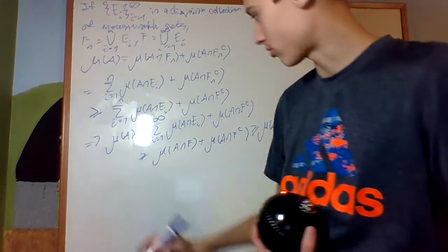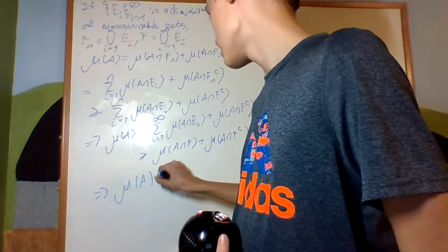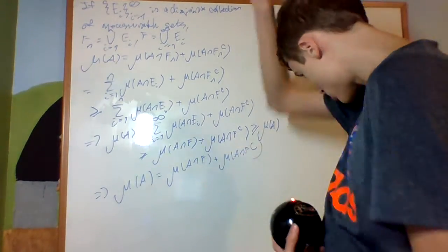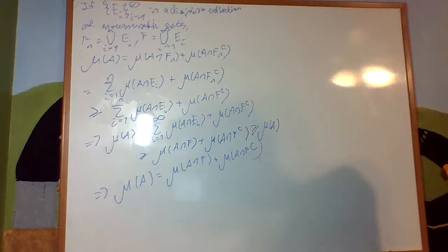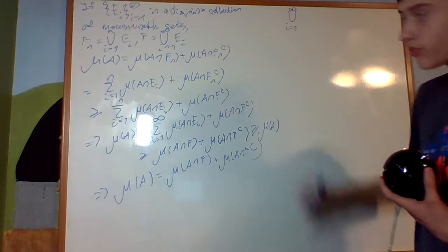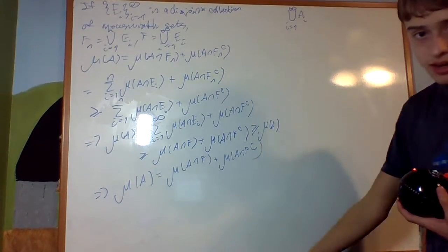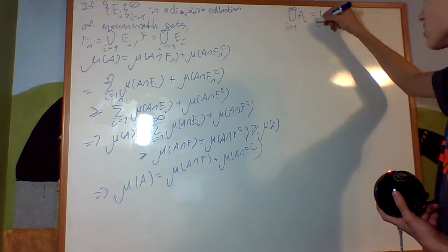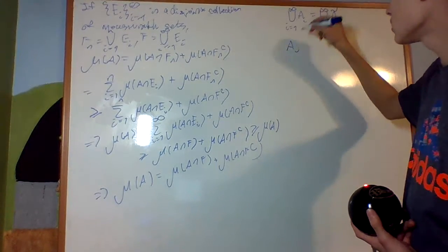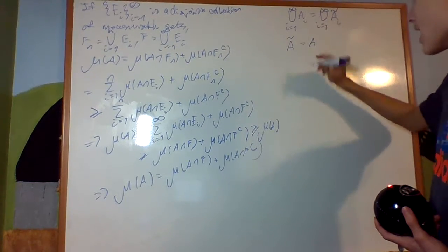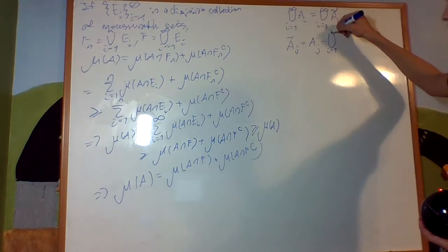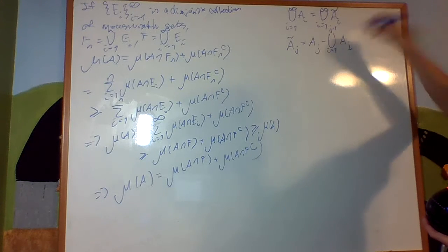Therefore μ(A) = μ(A∩F) + μ(A∩F complement). But this was proven for the disjoint case. We want countable unions in general, so it turns out the union from i=1 to infinity of Ã_i — what is Ã_j? We define Ã_j = A_j removing all of the ones before it, i.e., A_j minus the union of A_i for i < j.